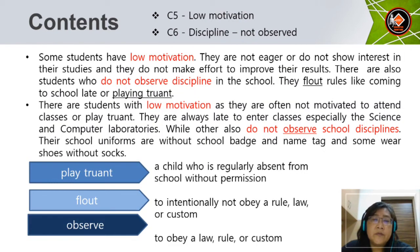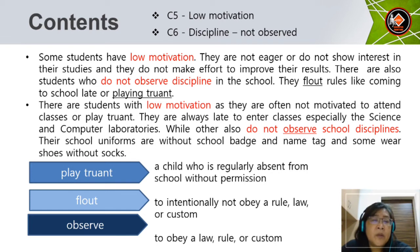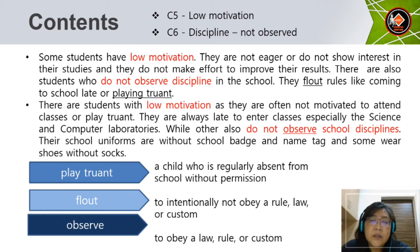Now we are looking at Content 5 — low motivation — and Content 6 — discipline not observed. For example: 'Some students have low motivation. They are not eager or do not show interest in their studies and do not make effort to improve their results. There are also students who do not observe discipline in school — they flout rules like coming to school late or playing truant.' Another example: 'Students with low motivation are often not motivated to attend classes. They are always late, especially to science and computer laboratories. Others do not observe school discipline — their uniforms are without school badge or name tag, or some wear shoes without socks.' Play truant means a child who is regularly absent from school without permission. Flout means to intentionally not obey a rule. Observe means to obey a law, rule or custom.